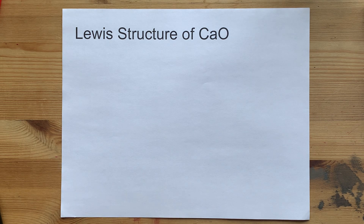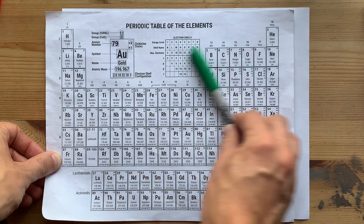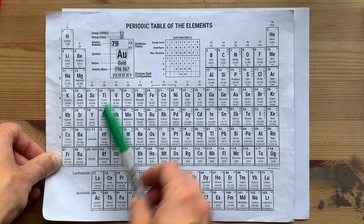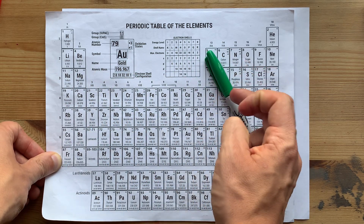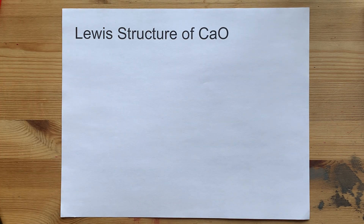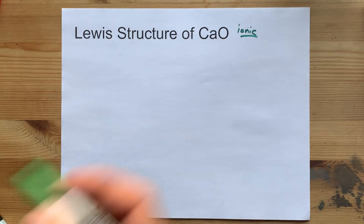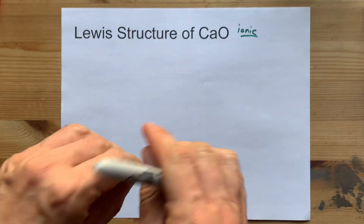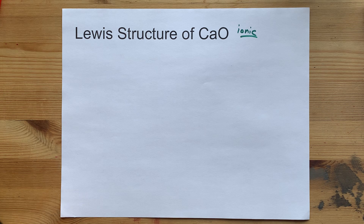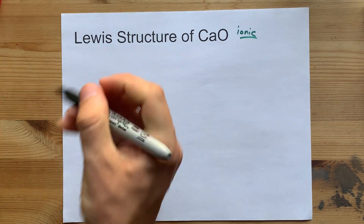The Lewis structure of calcium oxide has calcium, a metal from the left side of the periodic table, bonding with oxygen, a non-metal from the right-hand side of that staircase. Metals and non-metals combine to make ionic compounds because there's a transfer of electrons from one to the other. Calcium is in the second column and brings two valence electrons with it.